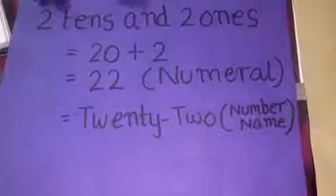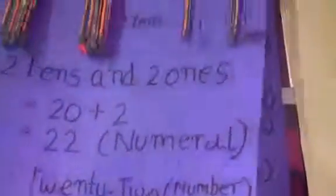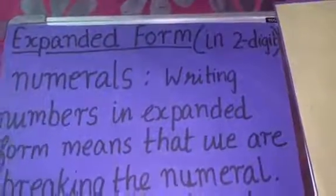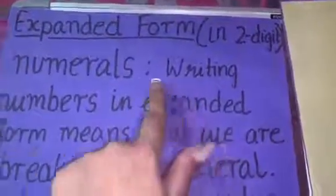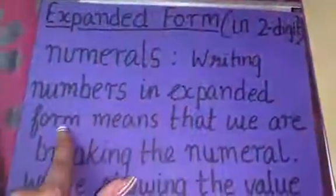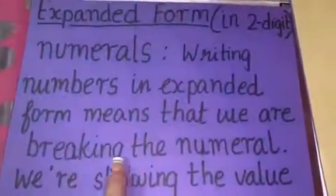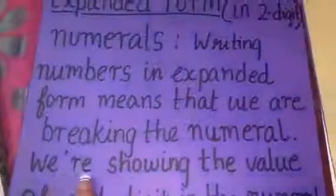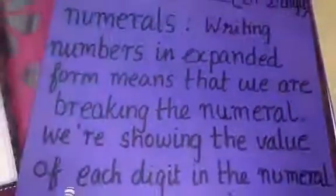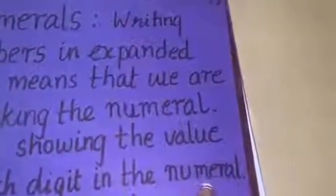Now, let us understand one more concept that is the expanded form. We are going to talk here about expanded form of numerals that is 2 digits. First, let us read. Writing numbers in expanded form means that we are breaking the numeral. We are showing the value of each digit in the numeral.